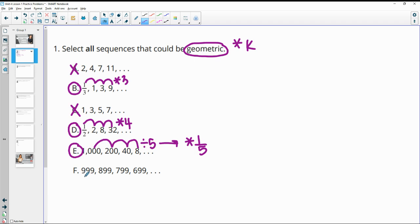And then F is 999, 899, 799, 699. So this one is subtracting 100 each time. So that is not geometric.